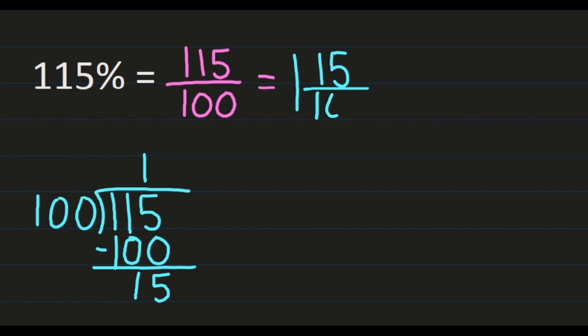Then we need to think about whether we need to simplify or not. Well, 15 and 100 share a common factor of 5, so this can be simplified. I can divide my numerator and denominator both by 5. So simplified, I'll still have the whole number 1. Then I have 15 divided by 5 is 3, and 100 divided by 5 is 20. So 115% is equal to 1 and 3 twentieths.